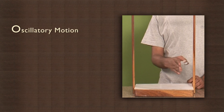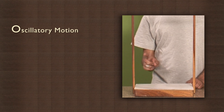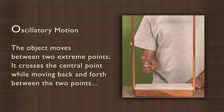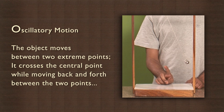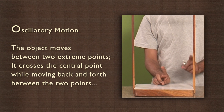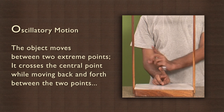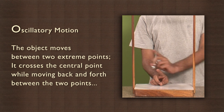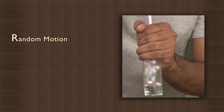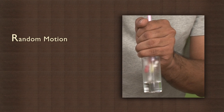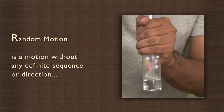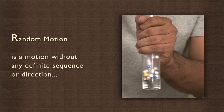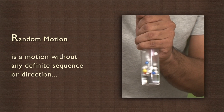The first type of movement is called oscillatory motion. The object moves between two extreme points, crossing the central point while moving back and forth. The movement of the thermocol balls is random motion. Random motion is a motion without any definite sequence or direction.